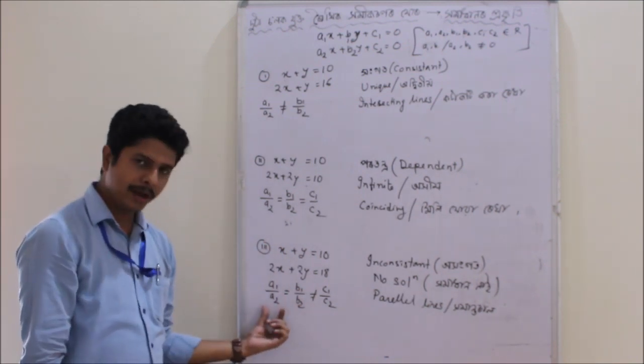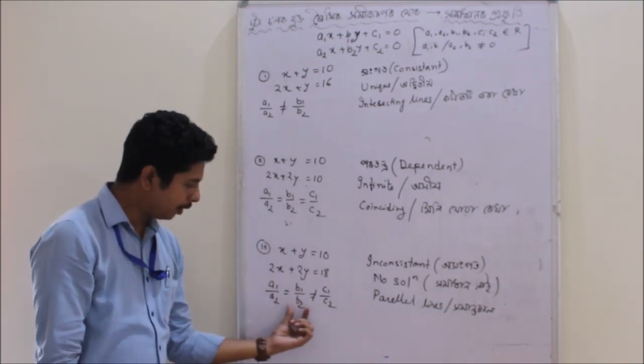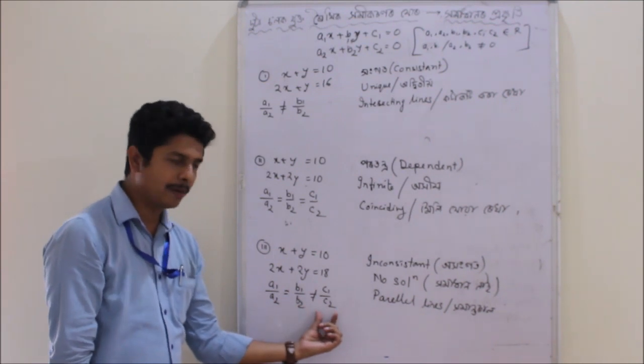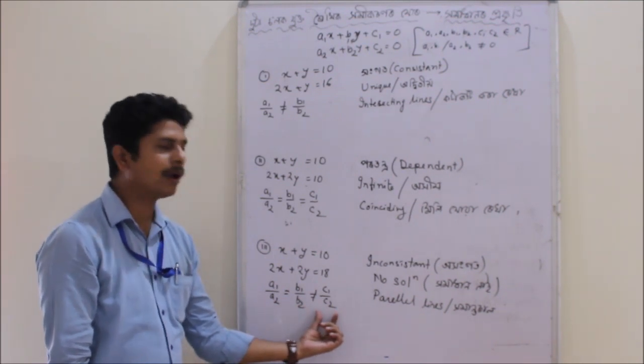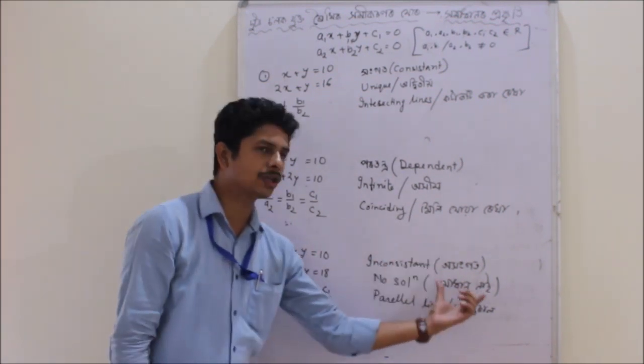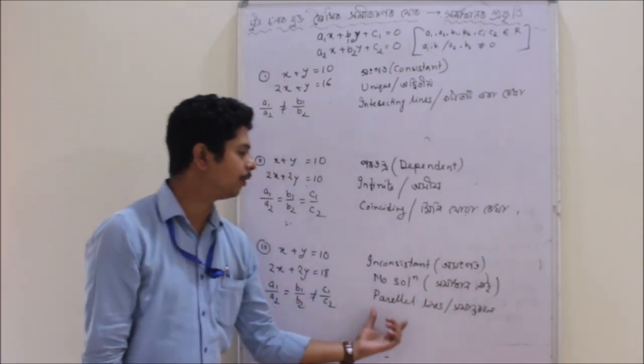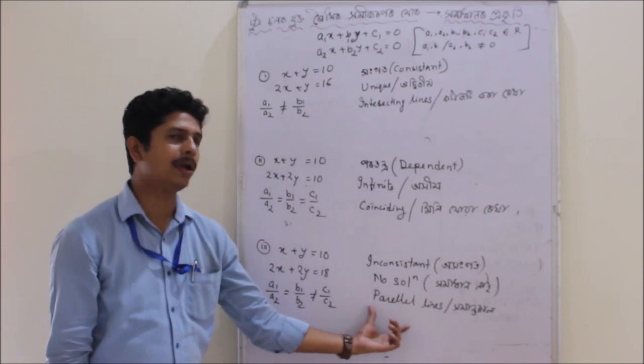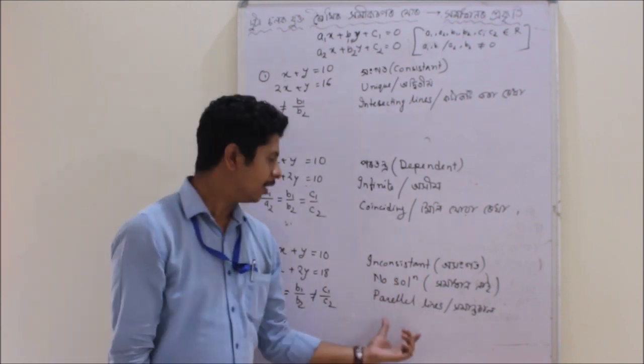If a1 by a2 is equal to b1 by b2, but that is not equal to our other terms, and if we are inconsistent, then we will not have a solution.